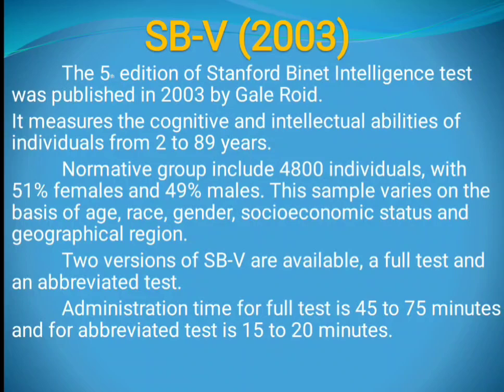The normative sample of SB5 includes 4800 individuals with 51% females and 49% males. This sample varies on the basis of age, gender, geographical region, race, and socioeconomic status.